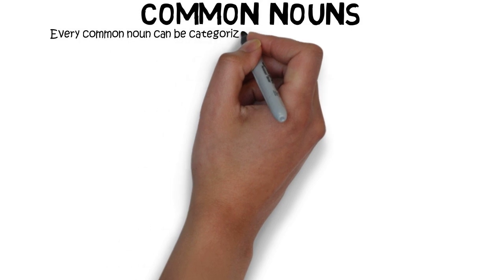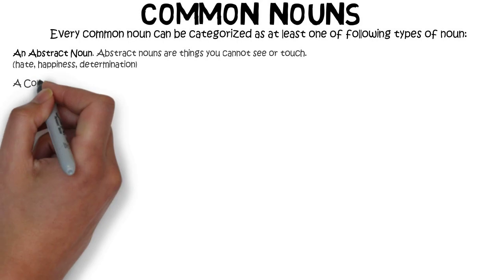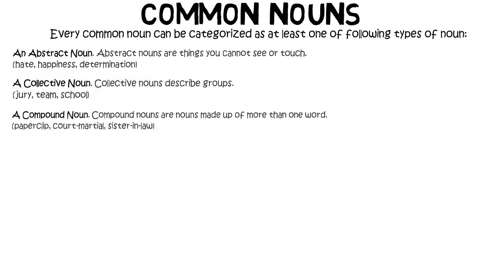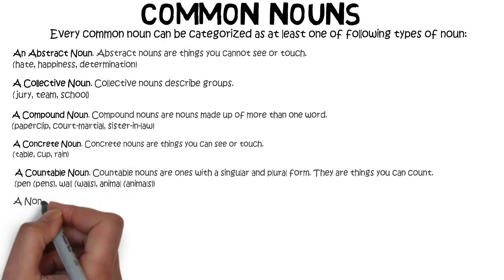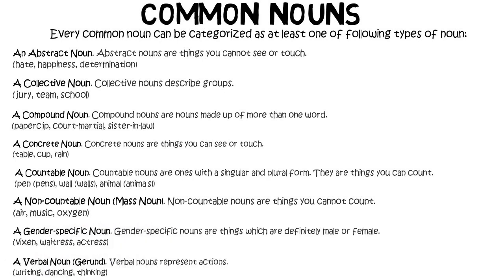We haven't quite finished yet. There's one more thing I'd want to say about common nouns: every common noun can be further categorised as at least one of the following types — an abstract noun, a collective noun, a compound noun, a concrete noun, a countable noun, a non-countable noun, a gender-specific noun, or a verbal noun. We're not going to go through these in this video, but if you want to read about them, you can pause this video or go to GrammarMonster, where we've got lessons, tests, and more videos on each of these noun types.